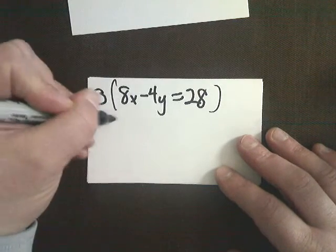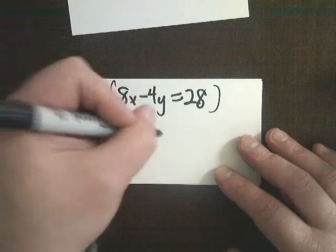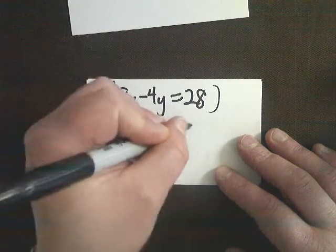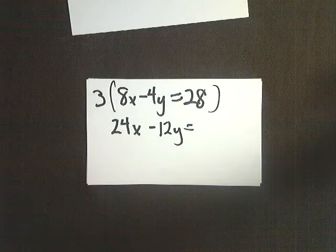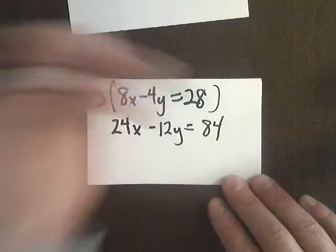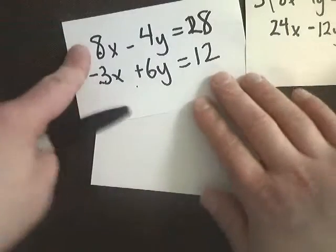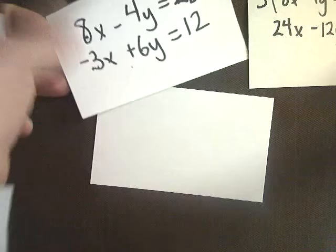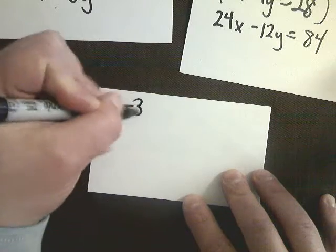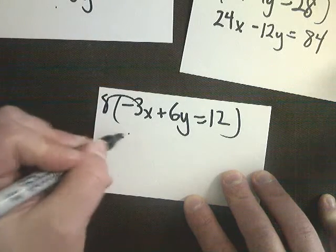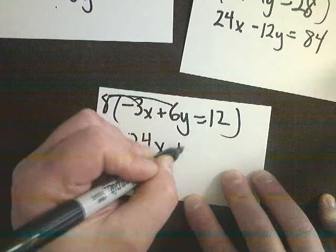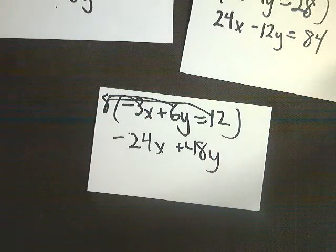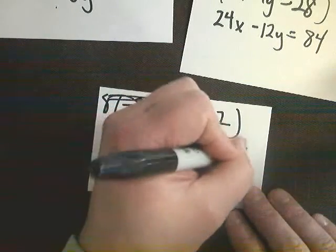So 3 times 8 is 24. 3 times negative 4 is negative 12. And 28 times 3 is 84. So that's the new equation I'm going to use. Now for the other one, I'm going to multiply by 8. 8 times negative 3 is negative 24x. 8 times 6 is 48. 8 times 12 is 96. So I get these two equations, and I'm just going to put them on top of each other.